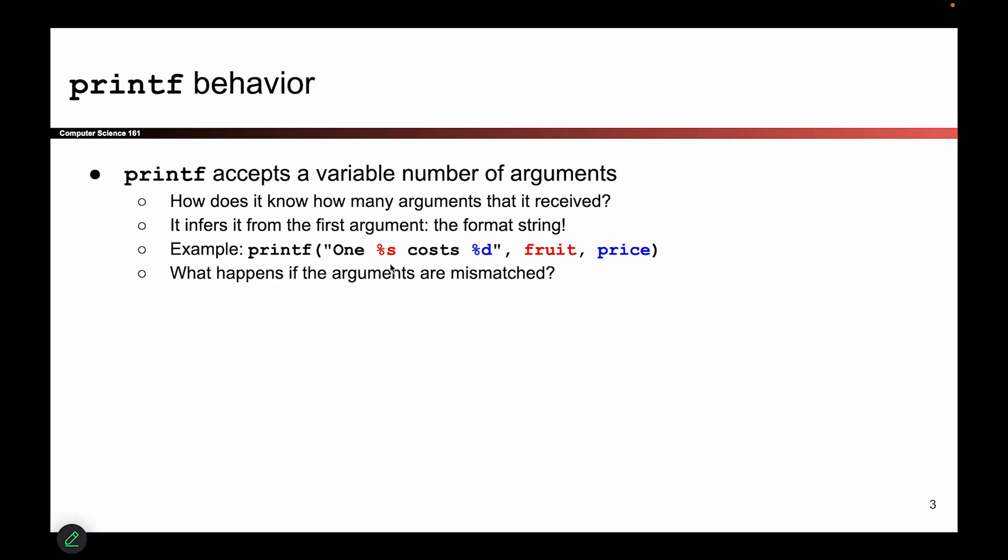For example, because in this case there are two percent formatters, a percent s and a percent d, I will provide two extra arguments to printf. The first percent s, replace that with the value of fruit as you're running this program. And this percent d, replace it with the value of price as you're running this program.